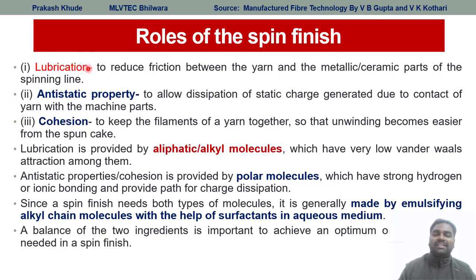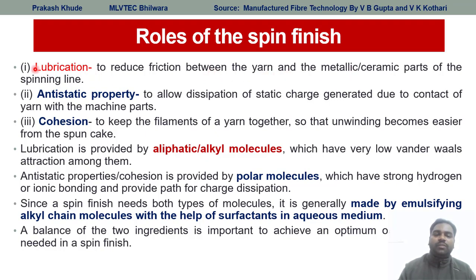Why is there a necessity of lubrication property in spin finish? To reduce friction between yarn and metallic surfaces, because the filaments are passing through different metallic parts. So they need to sustain that friction between yarn and metallic parts, and due to that the lubrication property should be there.